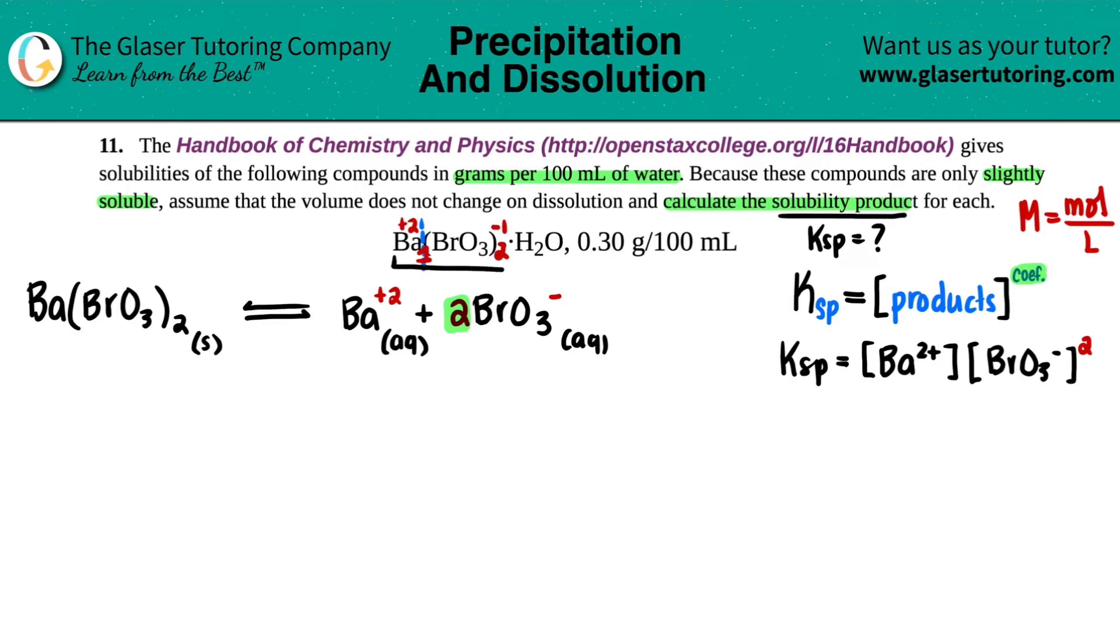Now, since we're starting off with grams, we do need to include the whole hydrate when we do this conversion. But then once we find the molarity value, we're going to just convert it into just the compound, the Ba(BrO3)2. So let's start it off. So we have 0.30 grams of the Ba(BrO3)2 and then the hydrate. I have to include that H2O. And this is all over the 100 mL.